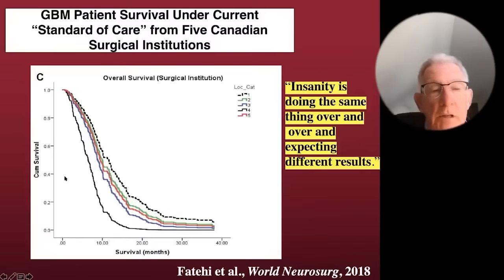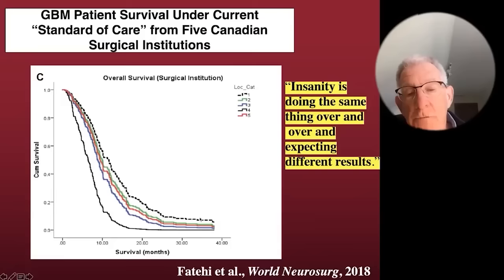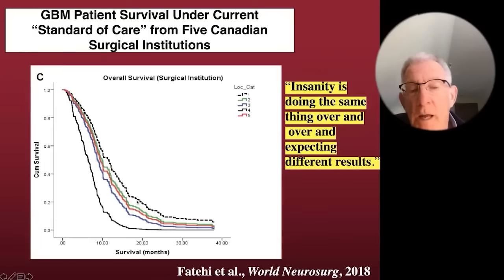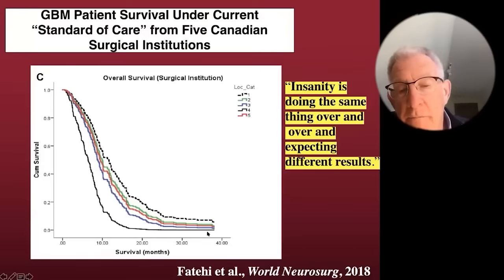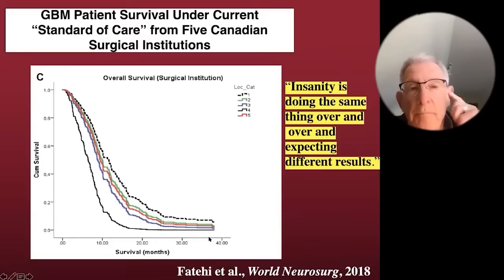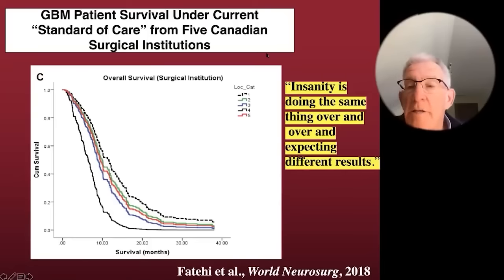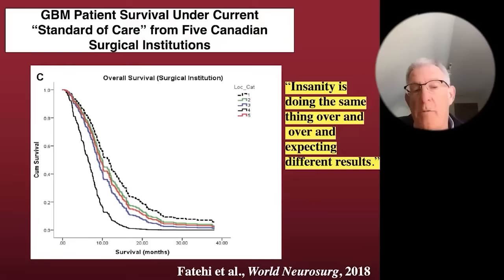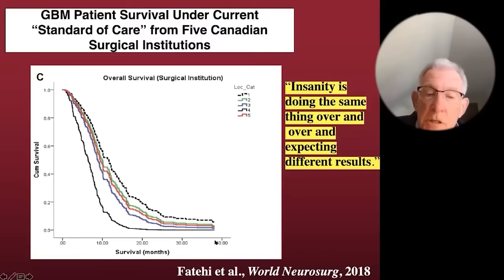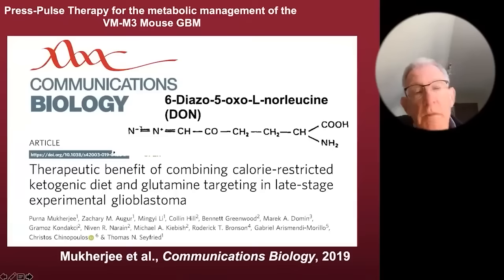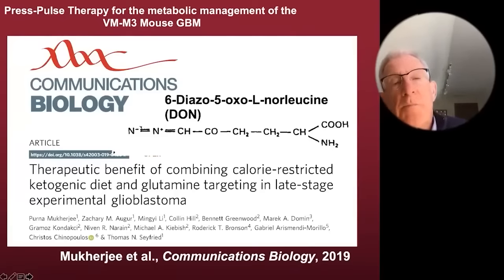There are two reasons for the lack of progress: first, the tumor is bad by itself; second, the very treatment used to manage it contributes to rapid demise — accelerating the fuels that drive cancer growth. It is clear why we haven't made progress: they don't understand it's a metabolic disease, not a genetic disease, and the treatment contributes to rapid recurrence. As Einstein said, insanity is doing the same thing over and over expecting a different result. As long as we continue treating patients the way we are, this survival curve will not change.